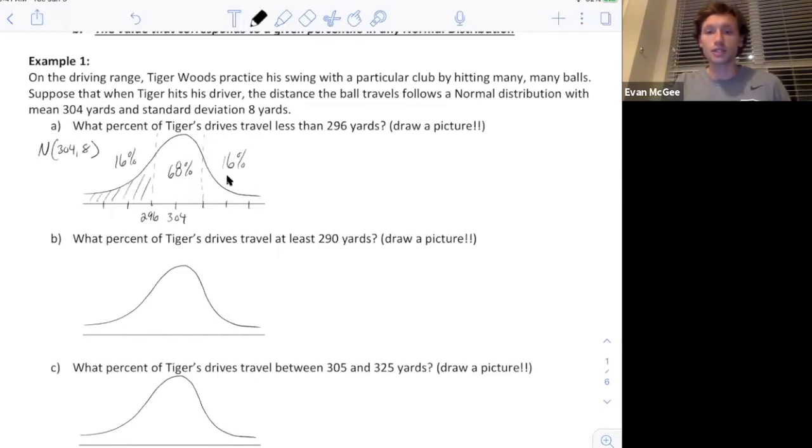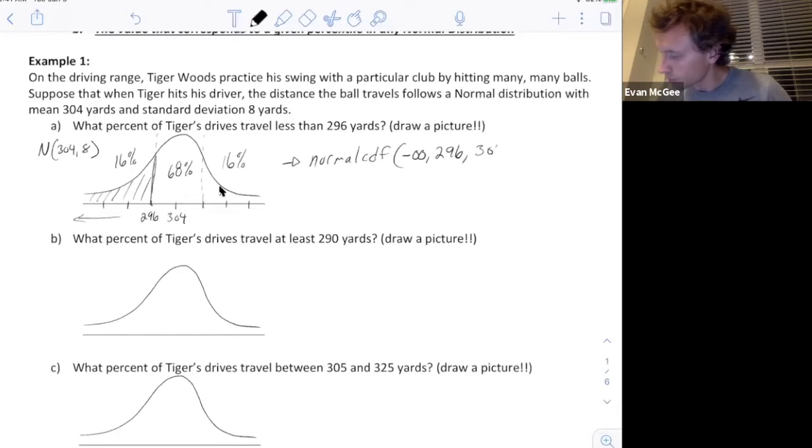Today I want to show you how to actually calculate this on your calculator. On your calculator, you're going to do this function called normal CDF. It's going to ask you for four things: your lower bound and your upper bound. My lower bound here goes forever to negative infinity, and then it comes up and stops at 296. The mean is 304, and the standard deviation is 8. You need to memorize those four things: lower bound, upper bound, the mean, and the standard deviation.